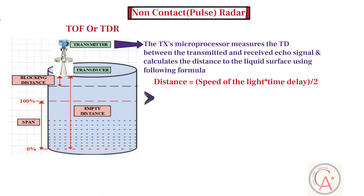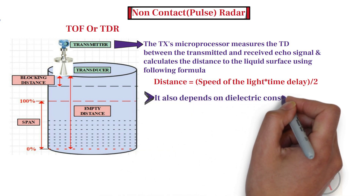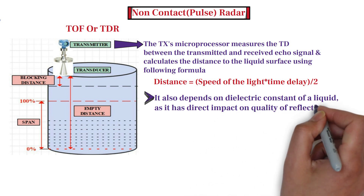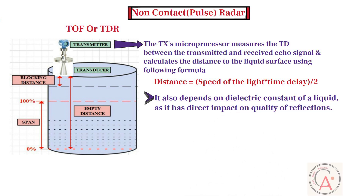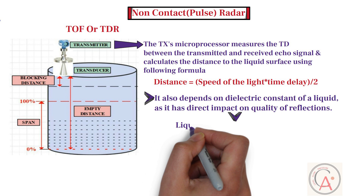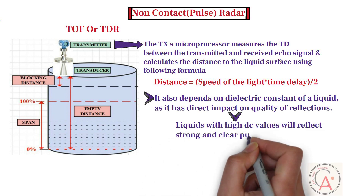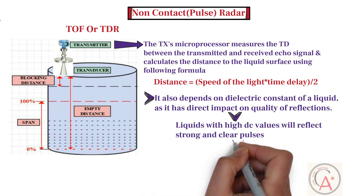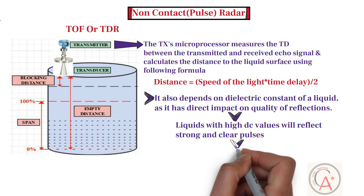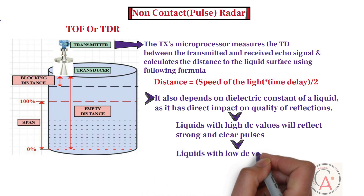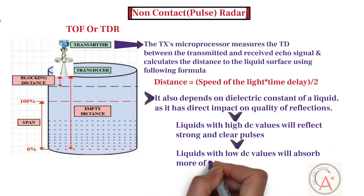Radar level measurement is highly dependent on the dielectric constant of a liquid, as it has a direct impact on the quality of reflections. Liquids with high dielectric constant values will reflect strong and clear pulses. On the flip side, liquids with low dielectric constant values will absorb more of the pulse, reflecting less and reducing accurate readings.